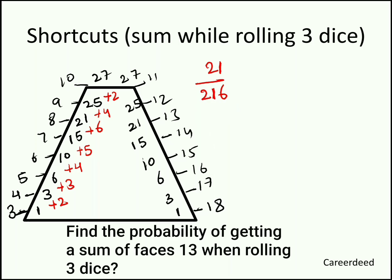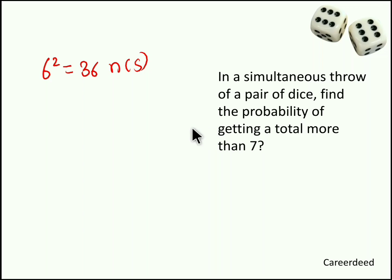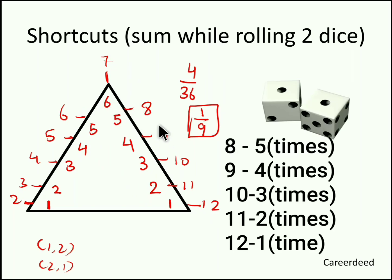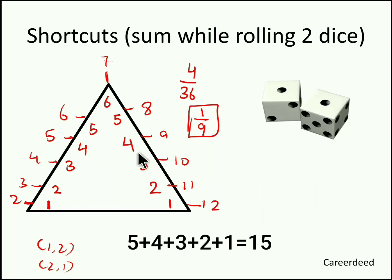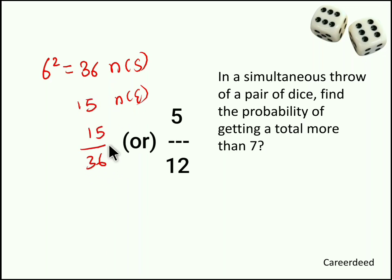Let's solve some problems. First question: in a simultaneous throw of a pair of dice, find the probability of getting a total more than 7. Total sample space = 6² = 36. Sums greater than 7 are: 8, 9, 10, 11, and 12. Their frequencies are 5+4+3+2+1 = 15. So the probability of getting a sum greater than 7 is 15/36.